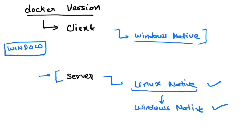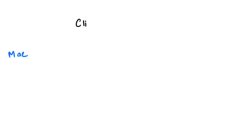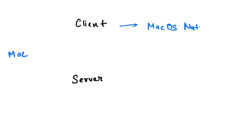The client always remains Windows native, since the command line commands must be understood by the Windows platform. Now, what about Mac? For Mac, you also have one client and one server. When you install Docker on Mac, the client is macOS native, so you run your Docker commands through the Mac OS interface.